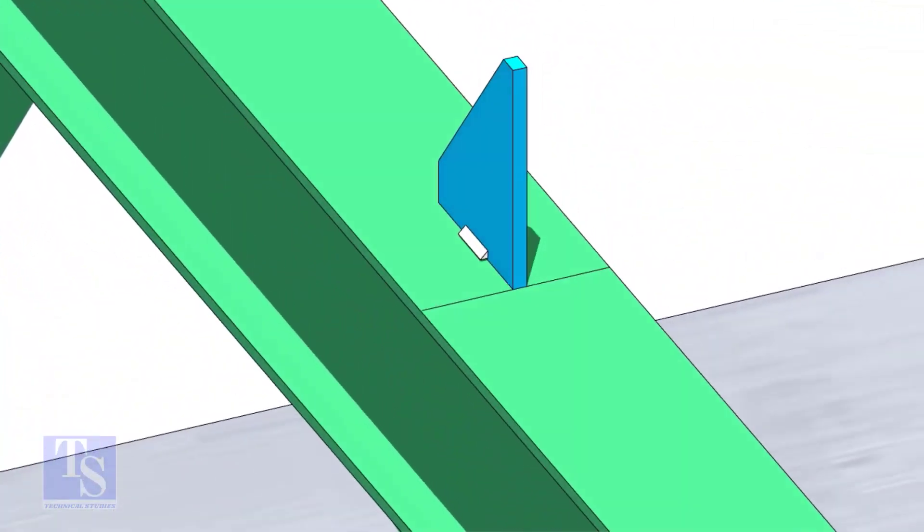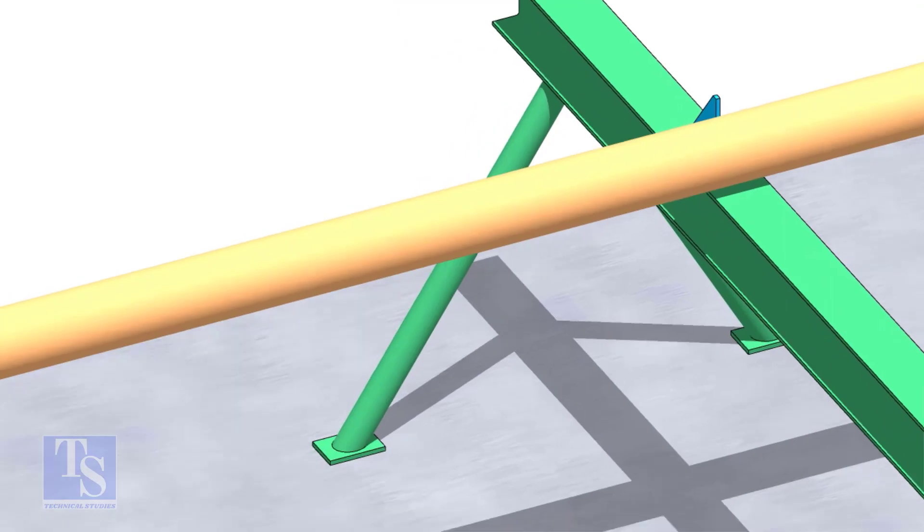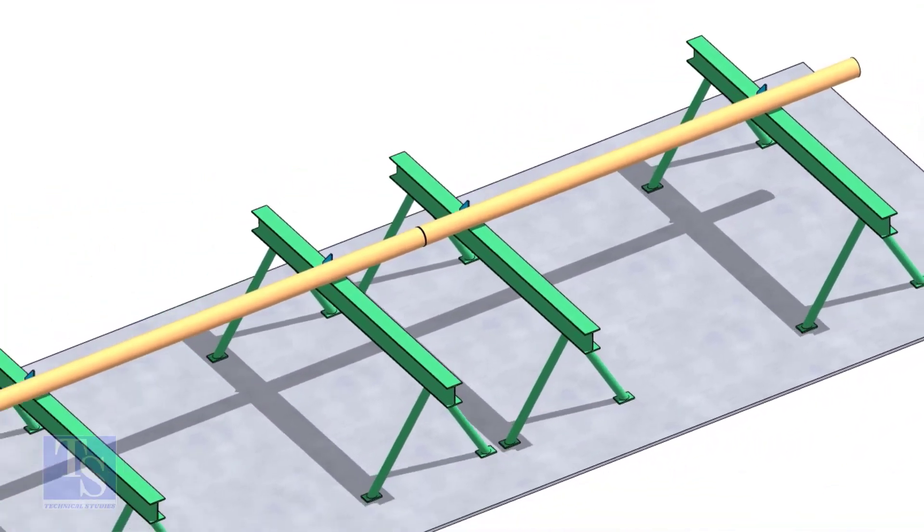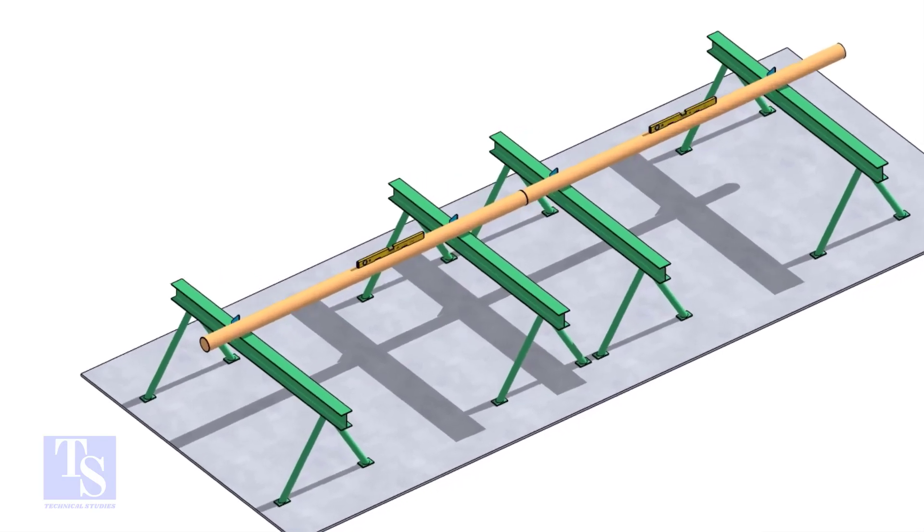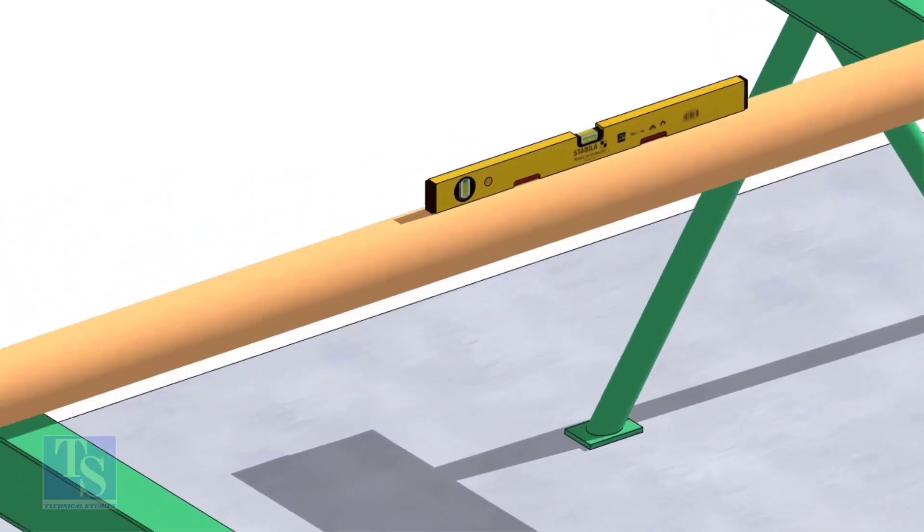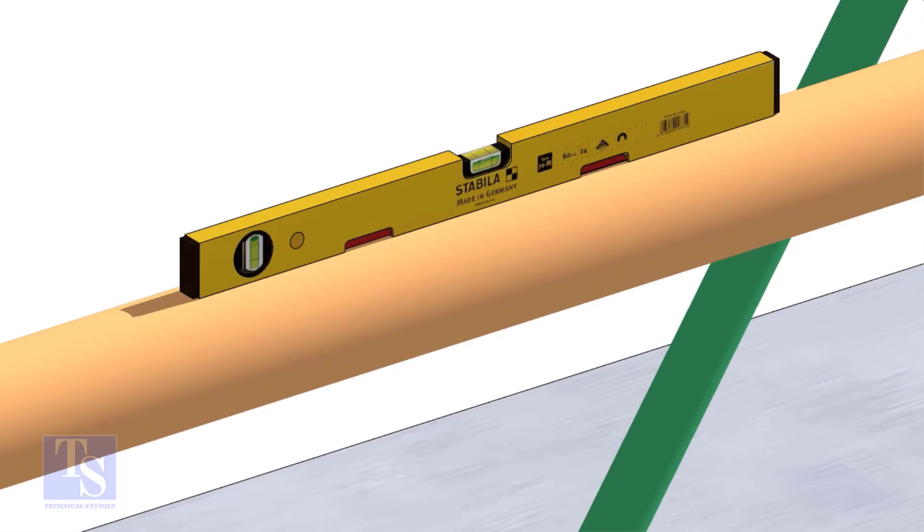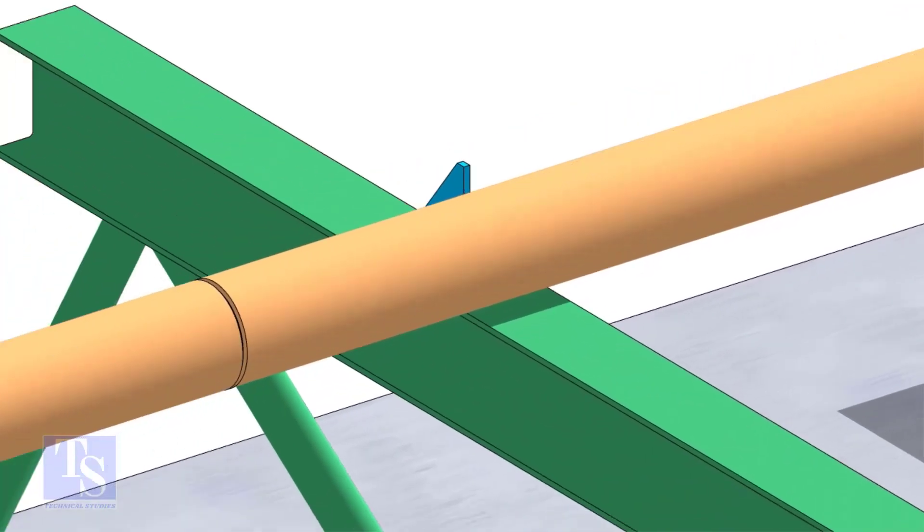Put the pipes on the stands, touching the stopper plates, as shown. The joint shall be in between the supports. Now the pipes are already straight, horizontally and vertically. You can cross-check the level of the pipes.